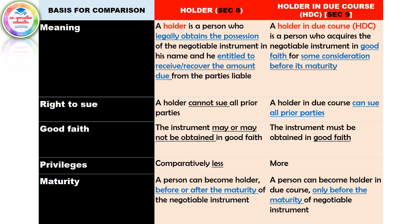The last condition is maturity. A person can become a Holder before or after the maturity of the negotiable instrument. However, a person can become a Holder in Due Course only before the maturity of the negotiable instrument. In terms of a negotiable instrument, the maturity is 3 months. That is after the maturity period. This means that the person can become a Holder in Due Course only before the maturity of a negotiable instrument.